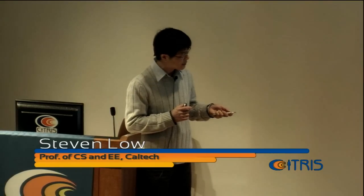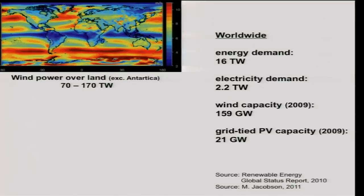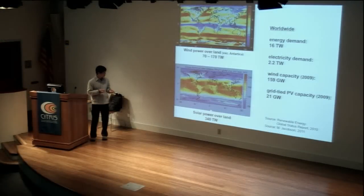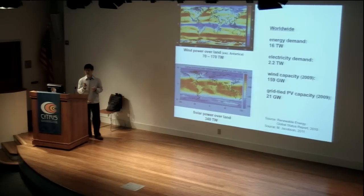This is how much we consume all types of energy, not just electricity. Electricity is only 2.2 terawatts. How much we're capturing from nature is a tiny bit in wind and solar, compared with the potentially harvestable wind power over land — many times the total energy demand. And much more in solar. Nature has more than we need. It's up to us engineers to capture it, transmit it, and manage it, which is difficult.